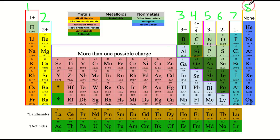The valence electrons are actually going to explain what is going on with these charges. This first column has one valence electron, hence a 1+ charge, because everything in the first column can lose that one valence electron and take on a 1+ charge. The second column loses 2 and takes on a 2+ charge. The third column can lose those three valence electrons and take on a 3+ charge.